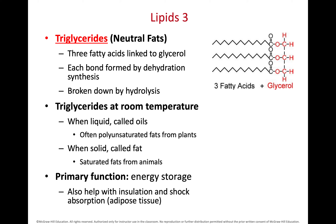A triglyceride is what we traditionally call fat — three fatty acids bound to one glycerol. A key characteristic of a triglyceride is that if it's solid we call it fat, and if it's liquid we call it an oil. Our solid triglycerides come from saturated fatty acids, and oils that are liquid at room temperature are polyunsaturated fatty acids. Saturated fats are solids; unsaturated fats are oils.